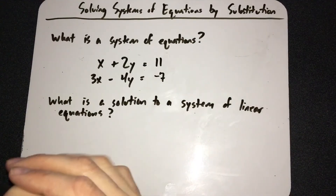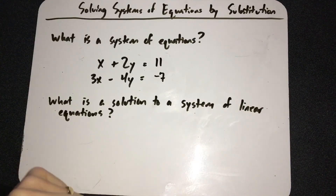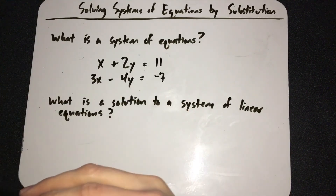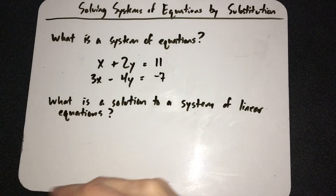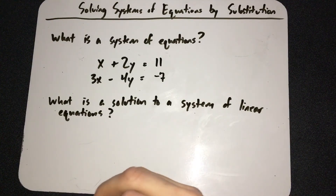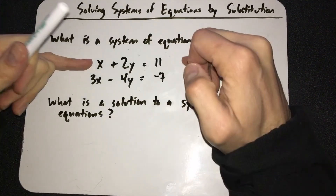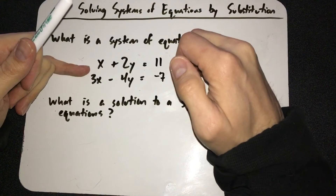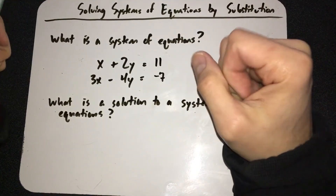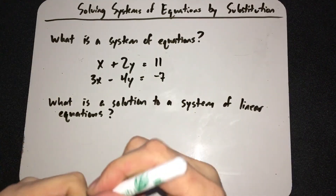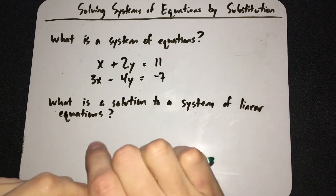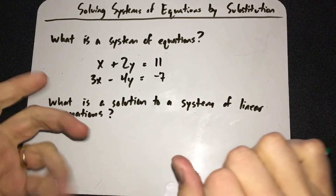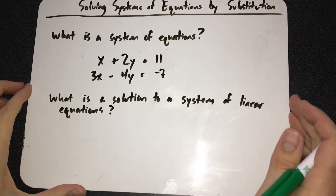It would be impossible to solve this with only one equation — if there are two variables, you need two equations. Eventually at the high school you might have three variables, and you'd need three equations to solve it. But that's not going to happen in this class. All we'll have is two equations for two variables, and it'll usually be x and y.